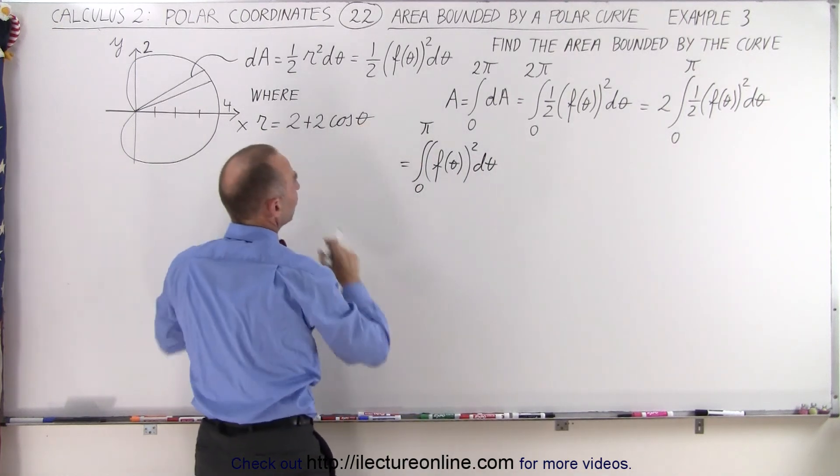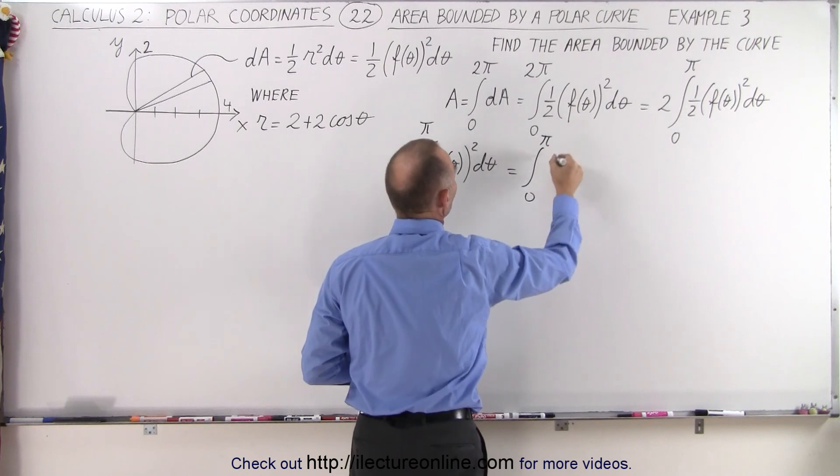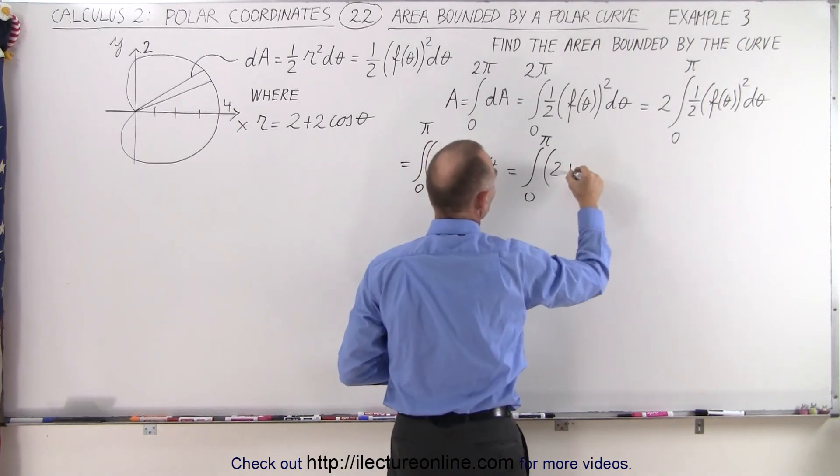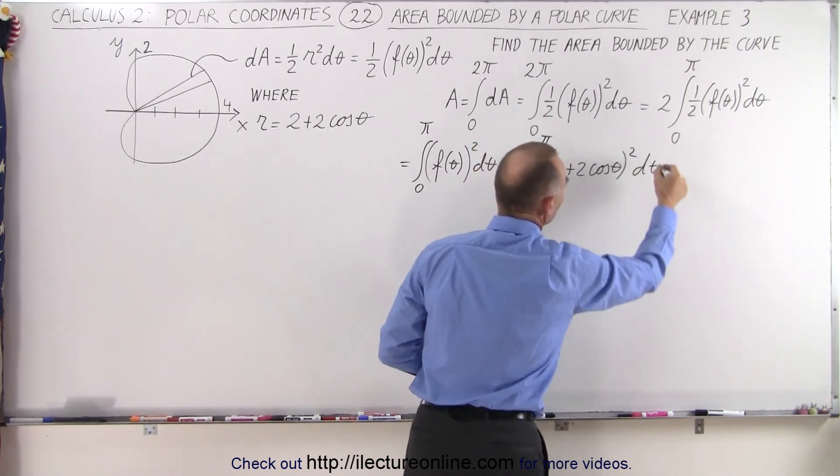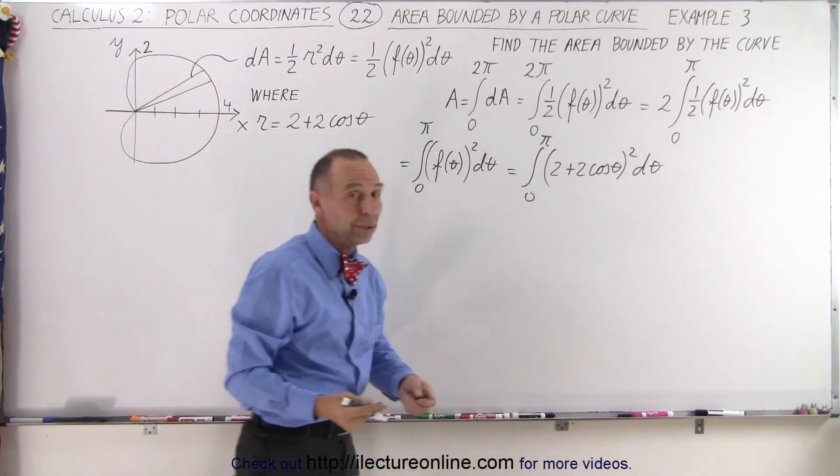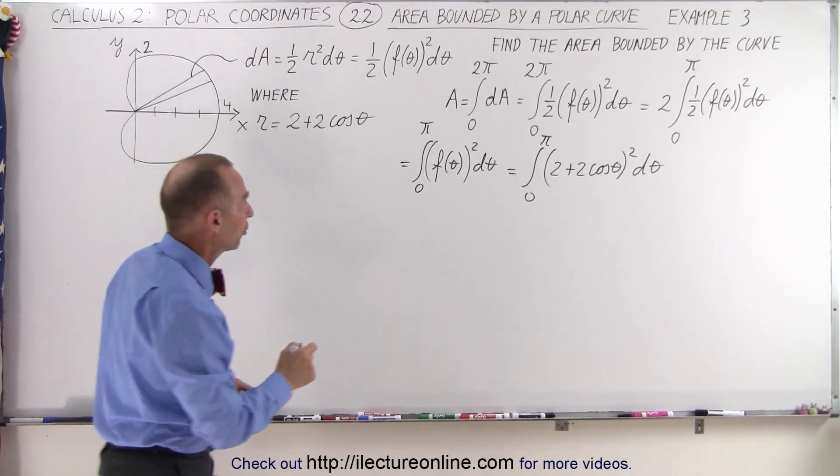And now we can plug in what that function is equal to. So this becomes equal to the integral from 0 to pi of the quantity 2 plus 2 times the cosine of theta squared times d theta. So all we have to do now is simply multiply that out and then integrate each of the terms.